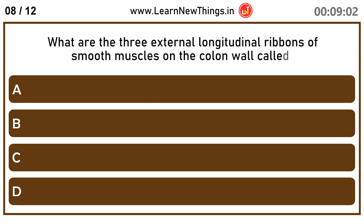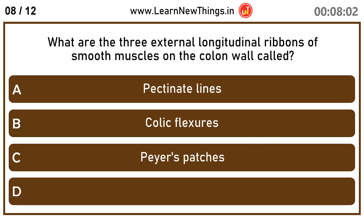What are the three external longitudinal ribbons of smooth muscles on the colon wall called? Teniae coli.